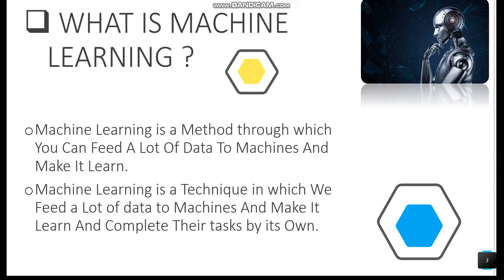The second question is: what is machine learning? Machine learning can be defined as a method through which you can feed a lot of data to machines and make them learn. In simple words, machine learning is a technique in which we feed a lot of data to machines and make them learn and complete their tasks on their own. Machine learning focuses on getting machines to make decisions by feeding them data.